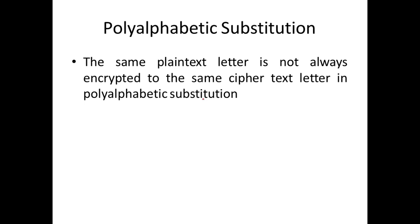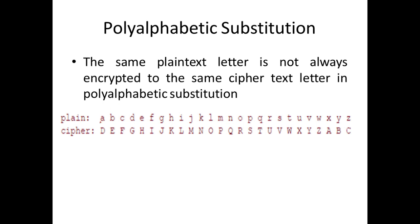Remember what we did in Caesar cipher? For instance, if you have the letter A, we just traverse three characters down and substitute A by D. The cipher for A is D, cipher for B is E, like that. Suppose if I need to encrypt A, B, A — the output will be D, E, D. So whenever the input plaintext character is the same, the output ciphertext will also be the same.